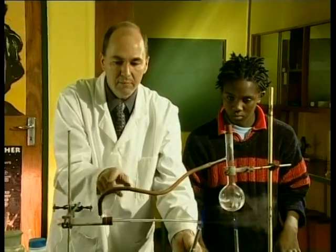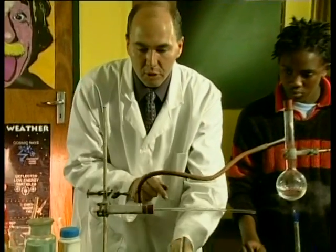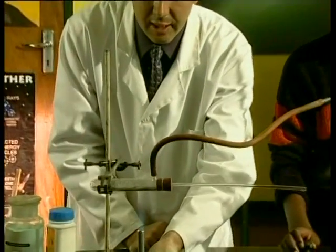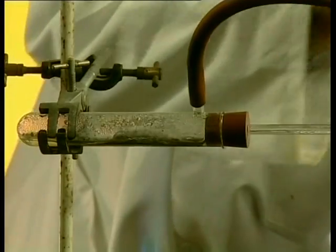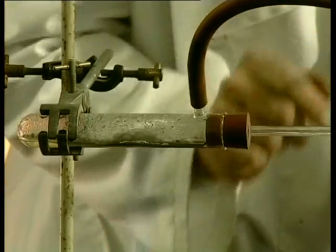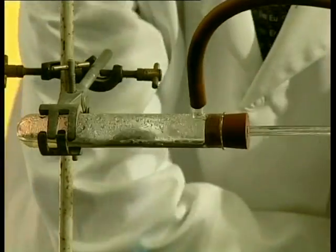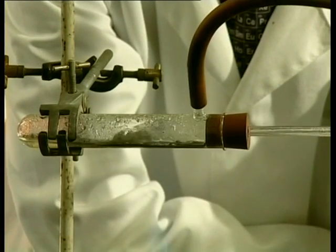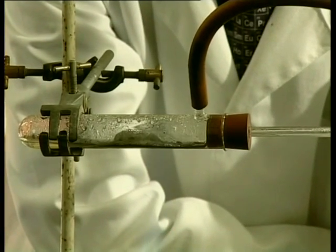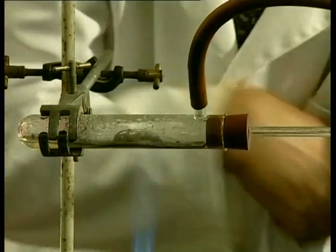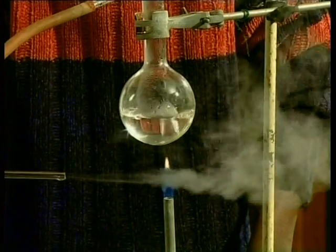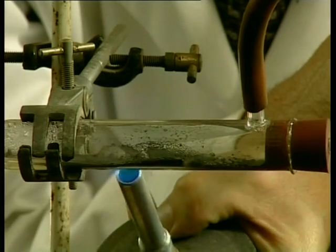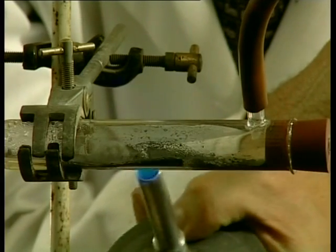We're passing steam over some iron. Have a look at what's happening to the iron when I heat it up. The hot steam passes over the iron and as we heat it up, the iron should start to react with it. We've got lots of steam escaping, but just now we're going to see something else happening as well. As you can see, the iron is changing to a darker colour.